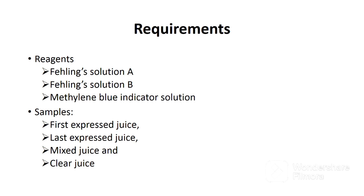Requirements for this analysis: first, reagents. Under reagents, you have Fehling solution A, which contains copper sulfate. Number two, you have Fehling solution B, which contains sodium hydroxide and potassium sodium tartrate. And you have methylene blue indicator. If you want to know how these solutions are prepared, kindly watch my previous video on analysis of reducing sugars.